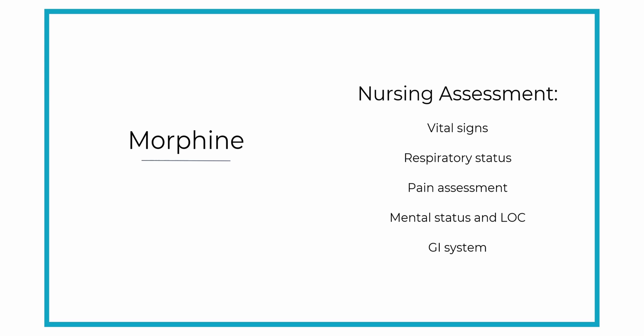Keep an eye on their mental status and continue assessing their level of consciousness. Make sure your patient is breathing adequately, their heart rate and blood pressure are stable, and their mental status is typical for them. Before giving morphine, also assess their GI system and monitor for constipation, because morphine will cause the GI system to slow way down.